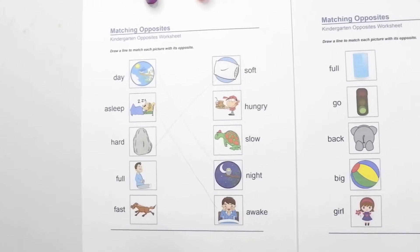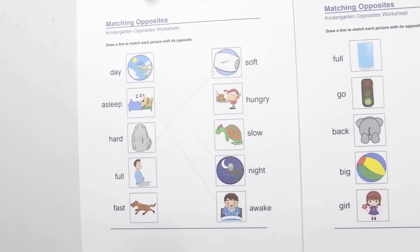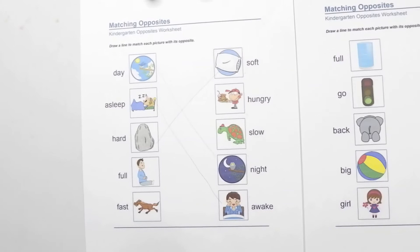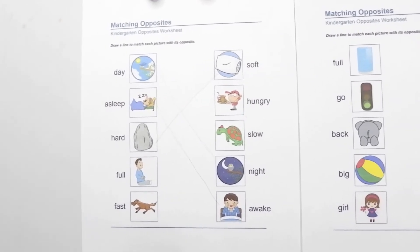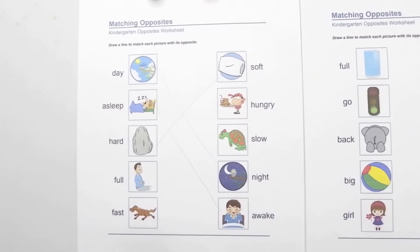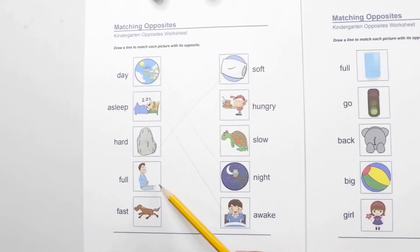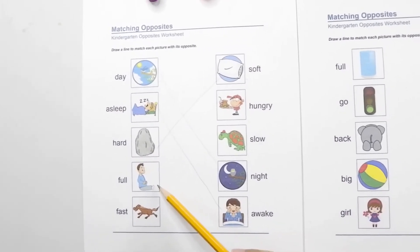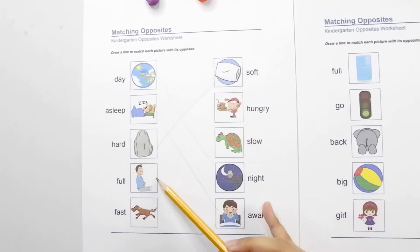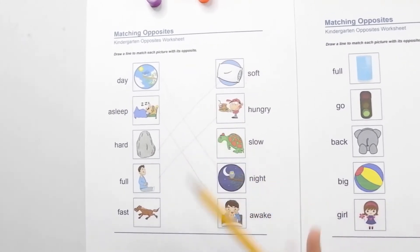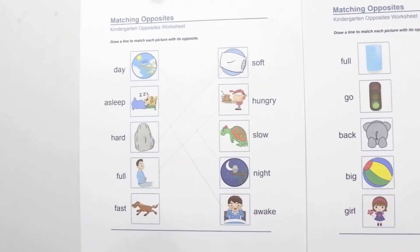Okay, it's your turn, chameleons. Can you match the word full? What is the opposite of full? Full directly contrasts with hungry. Full and hungry are opposites. Good job, chameleons! Let's try one more.